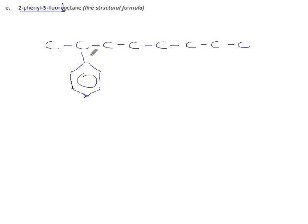2-phenyl-3-fluorooctane. Okay, so all this can wait. Octane means eight carbons. The second carbon has a phenyl group attached to it, which means it has a benzene attached to it. And the third carbon has a fluorine on it. So, there it is in the structural form.